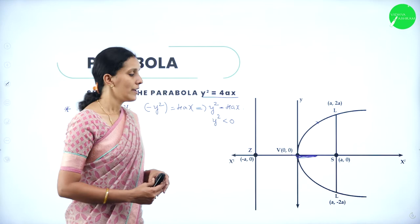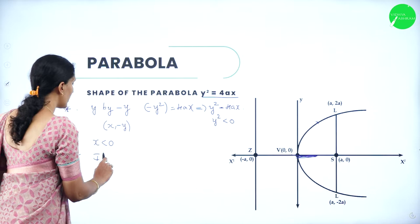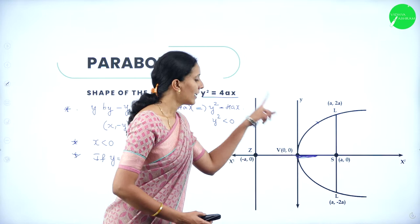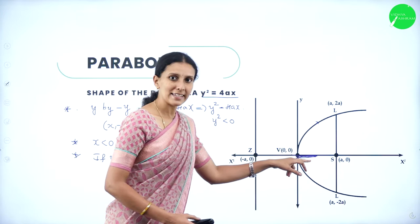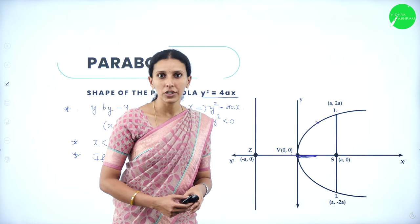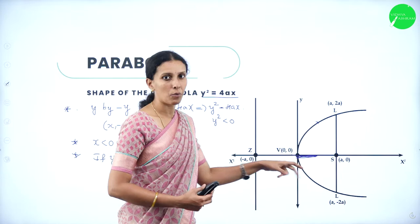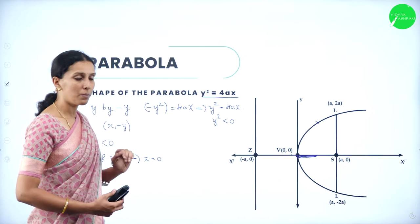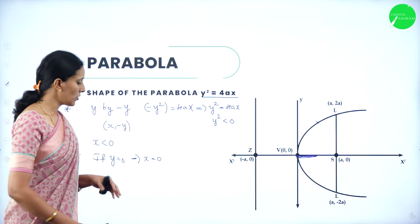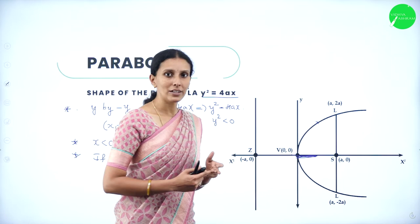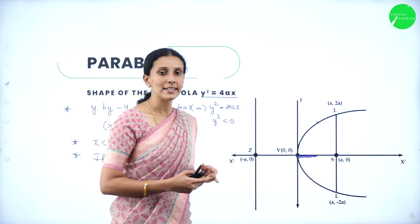If y = 0, this implies x = 0. So the parabola touches the origin, and the y-axis is tangent to the parabola because it meets the parabola at only one point — the origin. Any line touching a curve at only one point is called a tangent.